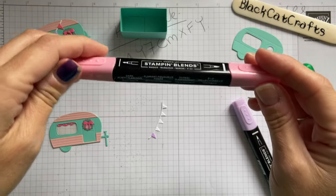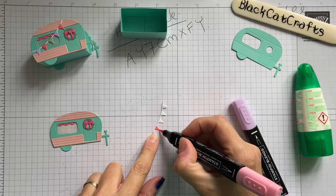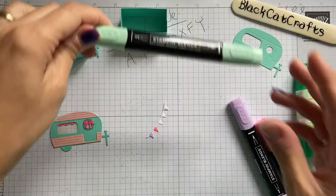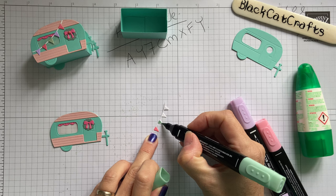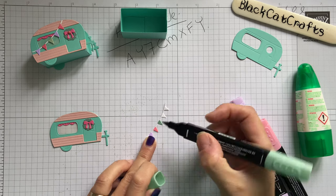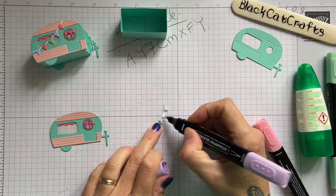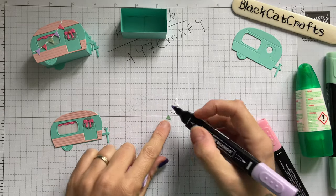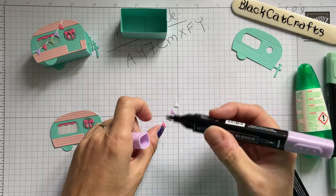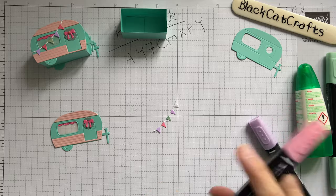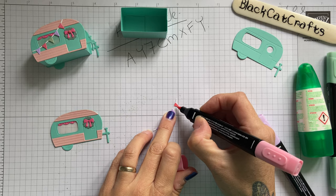Then I've got a dark flirty flamingo and a dark mint macaron.